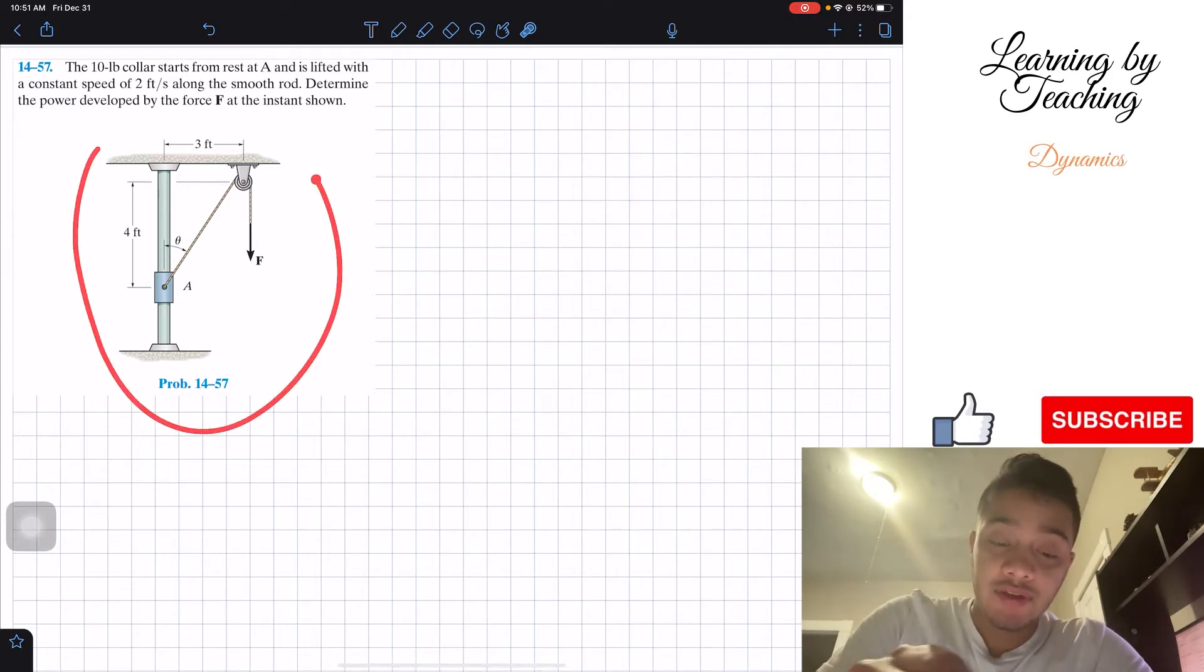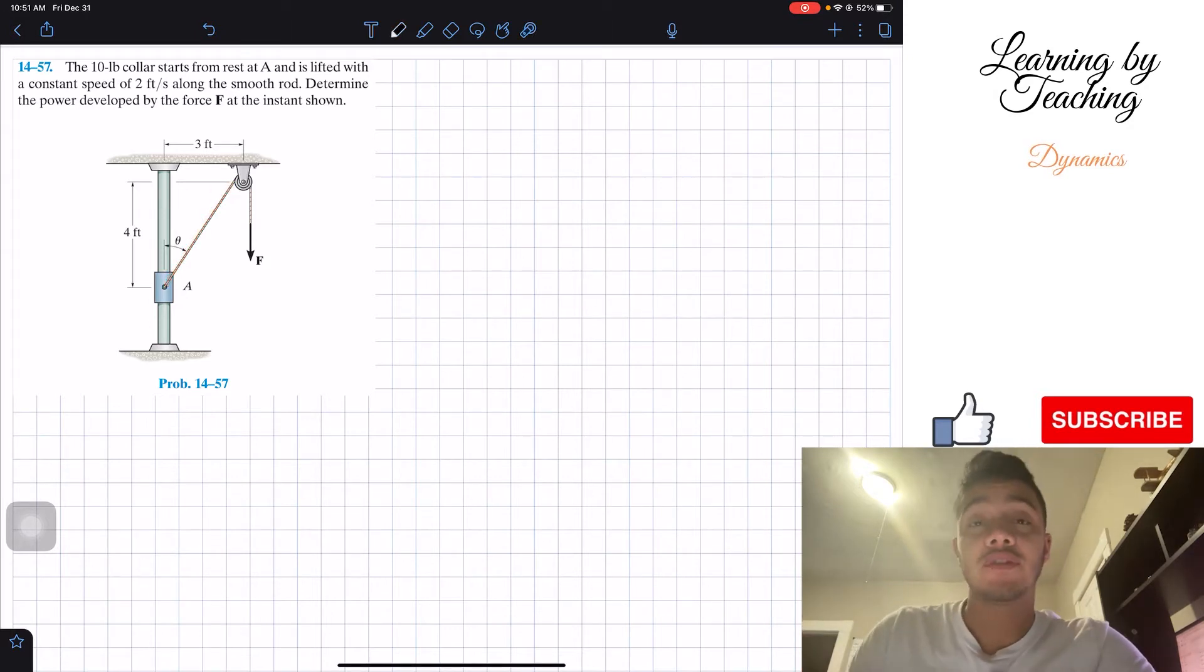Alright, so what we're having here is that we have this collar and it's basically traveling around this smooth rod because we have a force F that is pushing it upwards. So the first thing that we're going to do to solve this problem is write out our givens.